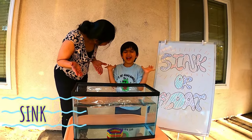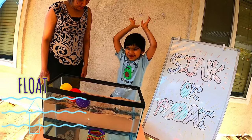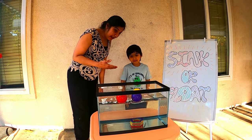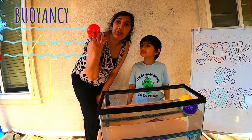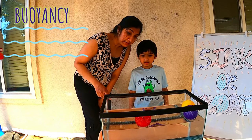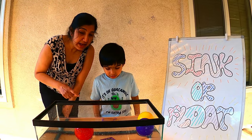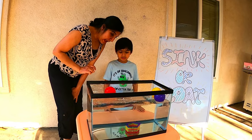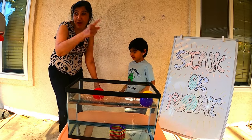What happened? It sinks. Now let's put this in. What happened? It floats! Yes — why do some objects sink and why do some float? Let's learn about buoyancy. When you put an object into water, water tries to push that object out. This upward force that the water exerts is called buoyancy. If an object is less dense than water, it floats, and if it is more dense, it sinks.